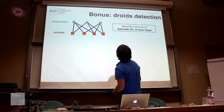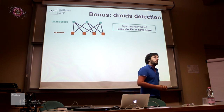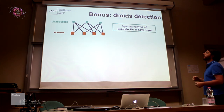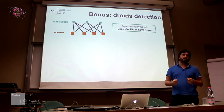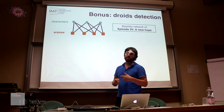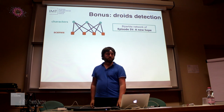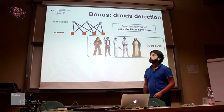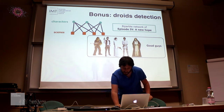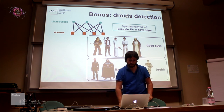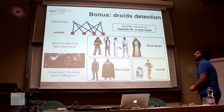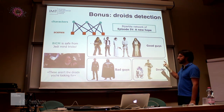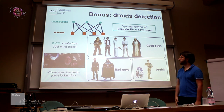As a bonus — droids of the faction — we made a bipartite network of Episode 4 of Star Wars, in which the upper layer has different characters and the lower layer has different scenes, with a link if a character appears in a given scene. Using the same projection approach described earlier, we were able to identify three different communities: good guys — Chewbacca, Han Solo, Princess Leia, and so on — bad guys with Darth Vader, and droids. Thus, the bipartite configuration model is saved from Jedi mind tricks: we are able to spot the droids you are looking for.